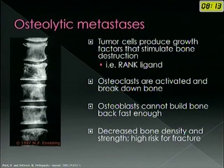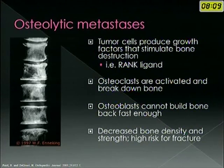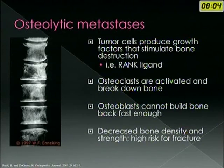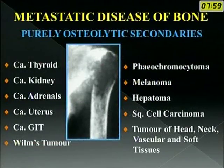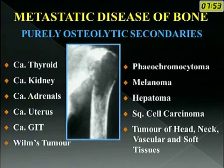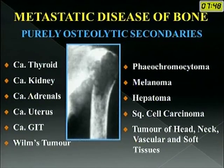There are two types of metastasis: osteolytic and osteoblastic. In osteolytic metastasis, osteoclasts are activated and break down the bone while the osteoblast doesn't form it, causing decreased bone density and a high risk of fractures. Common osteolytic secondaries come from thyroid, kidney, adrenals, uterus and gastrointestinal tract, though various other malignancies can also cause osteolytic secondaries.